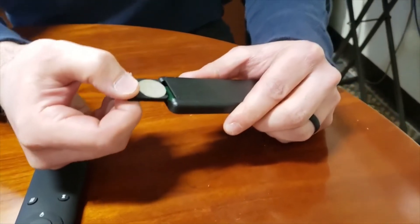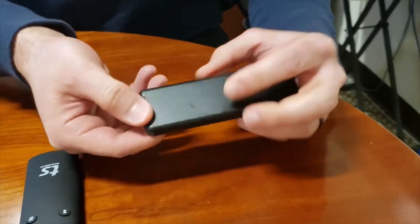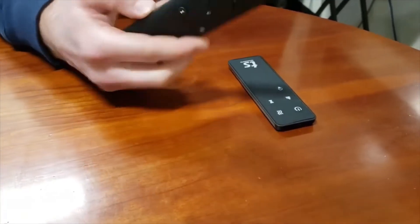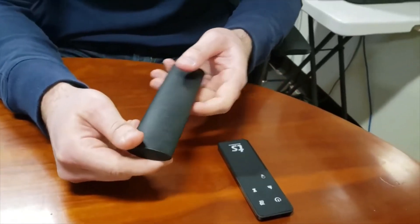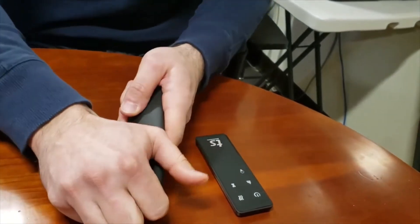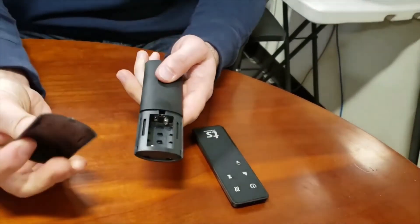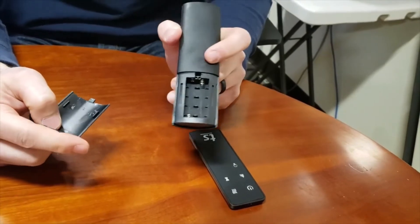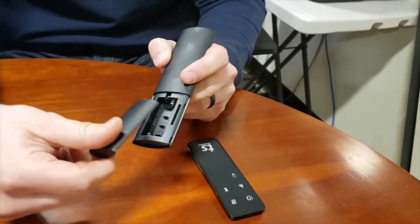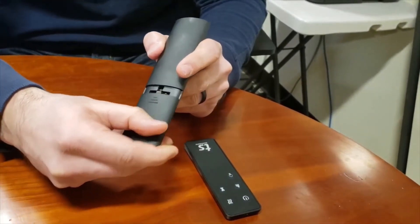Now for this style fireplace remote, it slides off a little bit different. You'll just want to grip the back. You'll access your AAA batteries right there and it just simply slides back on when you're done.